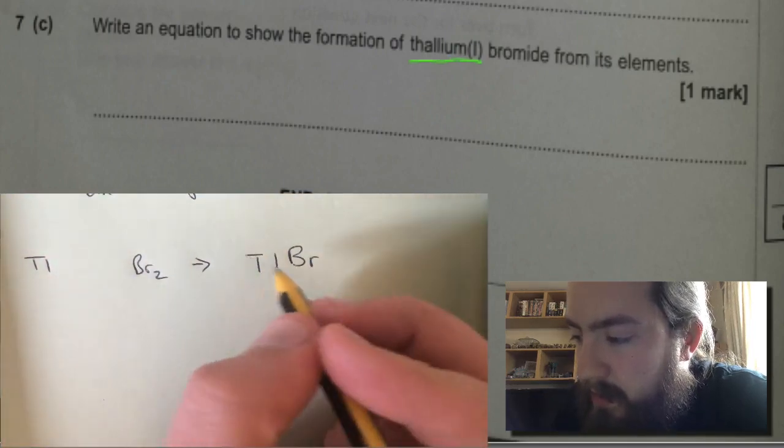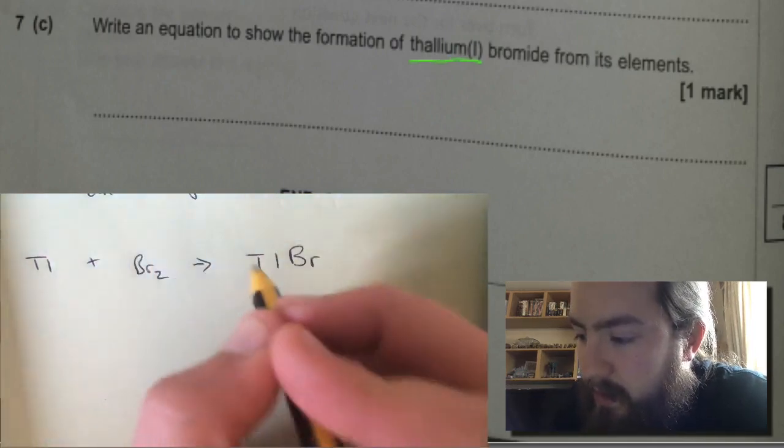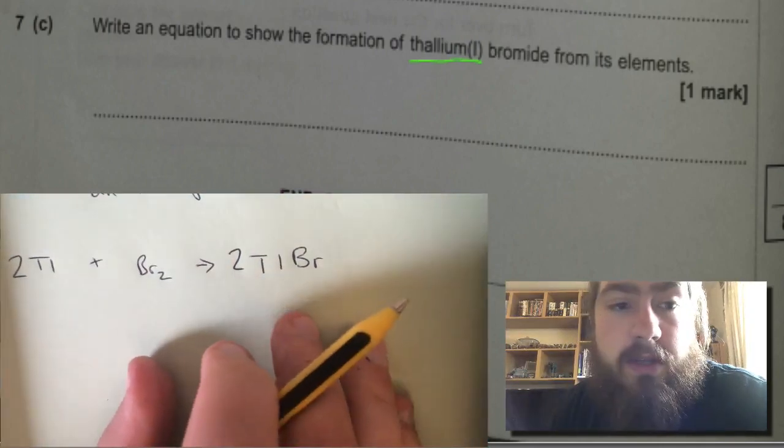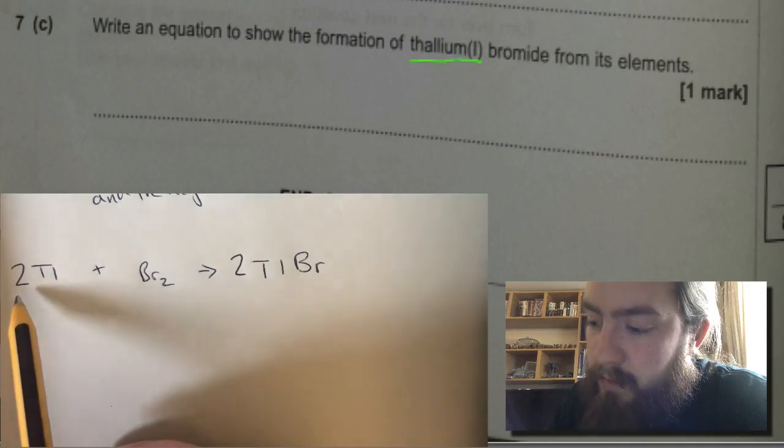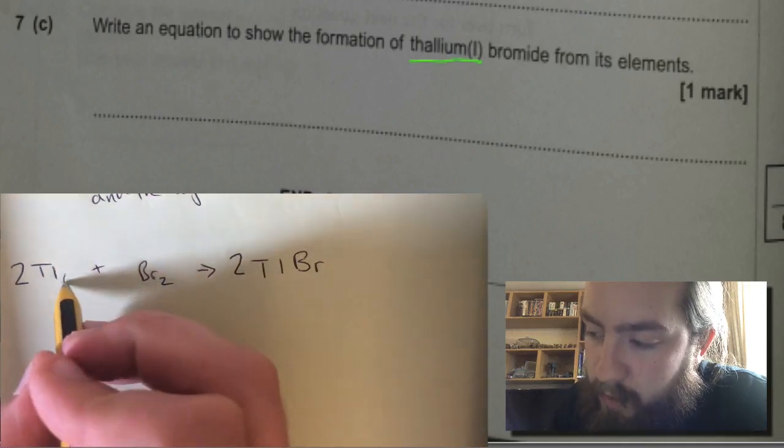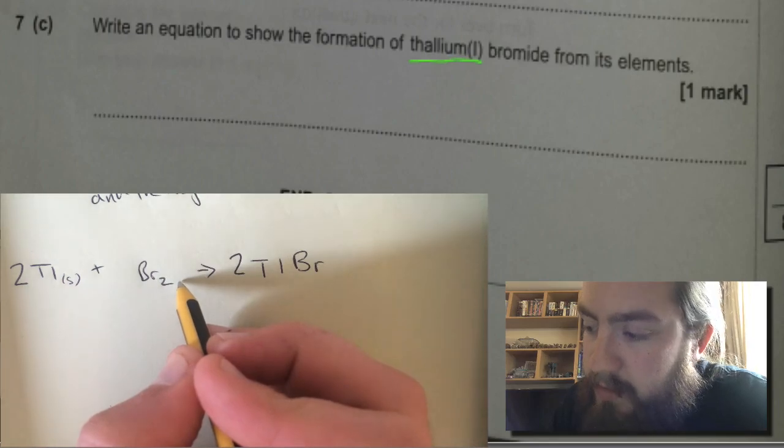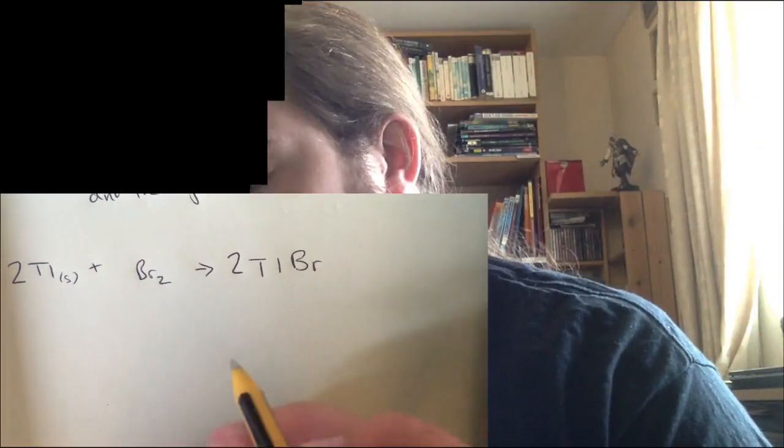We just need to have two bromines on this side and then two thalliums to make it balance. So two thallium, probably a solid, plus bromine goes to two thallium bromide.